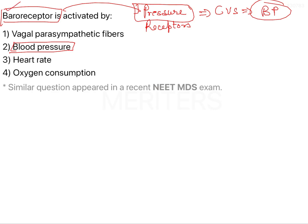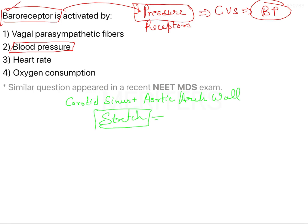Let's read some extra information about the baroreceptors. These baroreceptors are generally located in the carotid sinus and aortic arch wall. The stimulation is going to come from stretch, and this stretch comes from an increase in blood pressure.